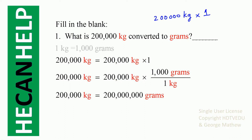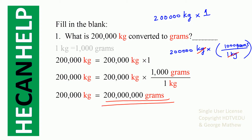We multiply 200,000 kg by 1, replacing it in such a way that we cancel kg. What is 1 kg equal to in grams? 1,000 grams. So we replace 1 with 1,000 grams over 1 kg — kg and kg cancel out, so you get your answer in grams. Basically you multiply by another 1,000 and we get 200,000 followed by three zeros grams.